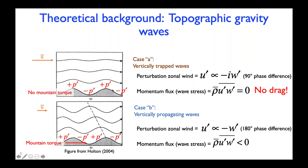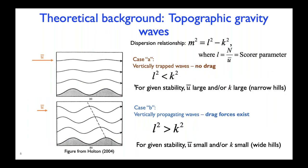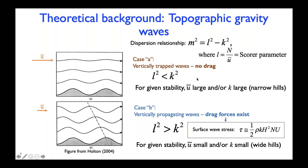The dispersion relation can be written in a form where the ratio of N over U is the score parameter. Its value relative to K-squared determines whether the wave will propagate or be trapped. When the score parameter is less than K, either due to strong winds or narrow hills, the wave will be trapped and there'll be no drag. When greater than K, either due to weaker winds or wider hills, the waves will propagate vertically and we'll have gravity wave drag. The surface wave stress is approximated by a formula that varies linearly with horizontal wave number, static stability, U wind, and by the square of the mountain amplitude H.